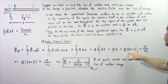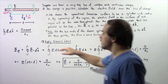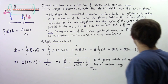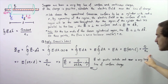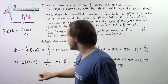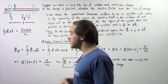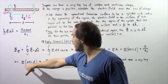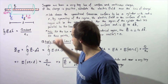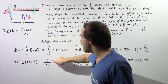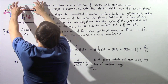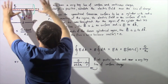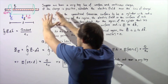So E multiplied by 2πR multiplied by L is equal, by Gauss's law, to Q divided by epsilon naught. The electric field multiplied by the surface area of this chosen region equals Q divided by epsilon naught, where Q is the enclosed charge inside our chosen region.